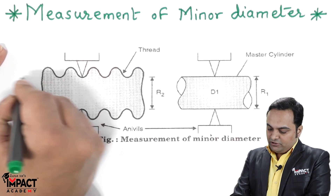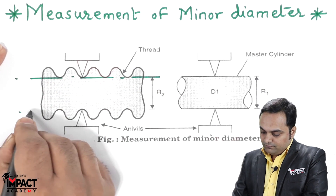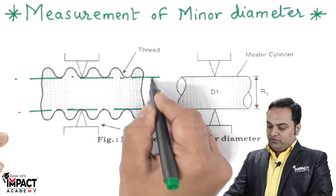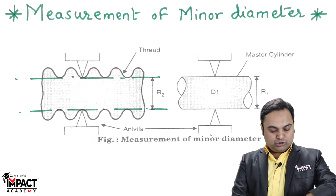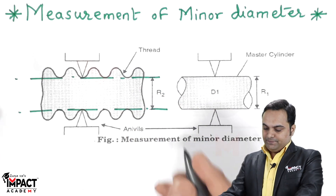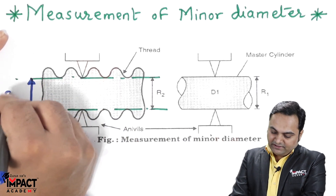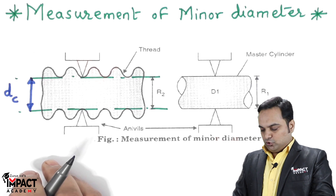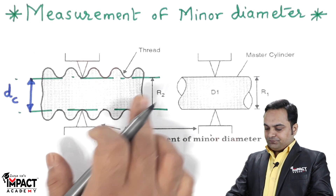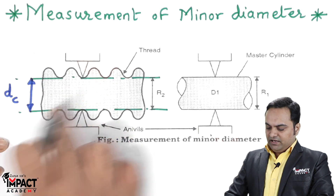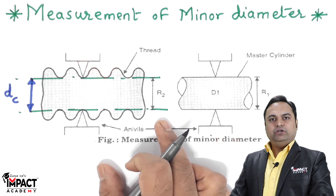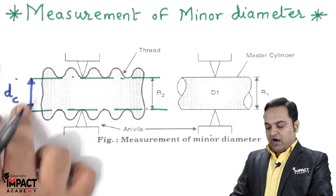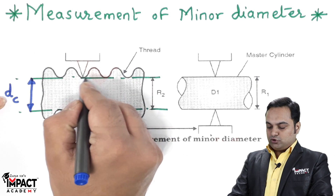In screw threads there are two different diameters. The diameter shown here is called the minor diameter, also called the root diameter, denoted by d suffix c — the core diameter. We also have the outer diameter, called the nominal diameter. In this video we are specifically going to see how to measure this core diameter or root diameter of a screw thread.